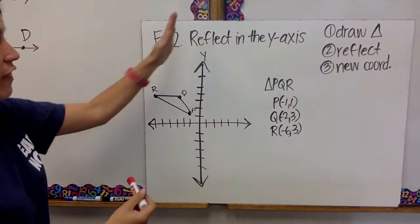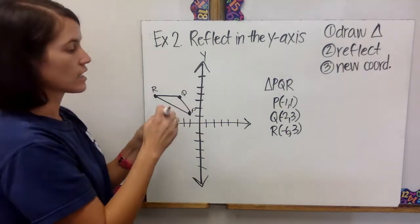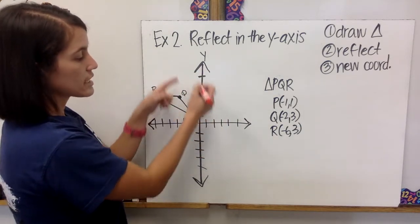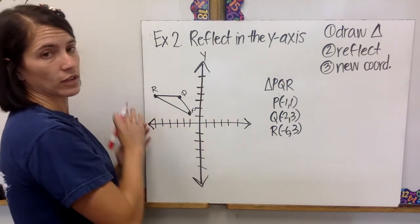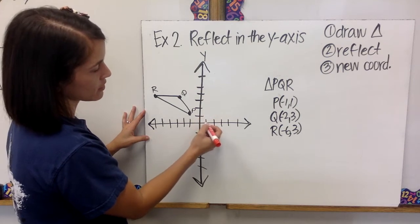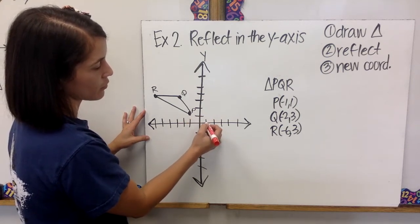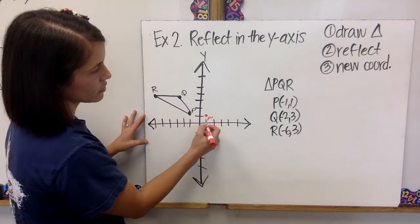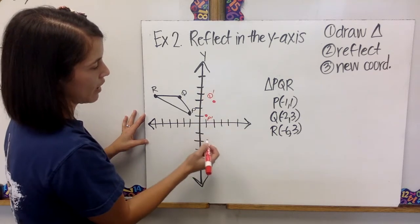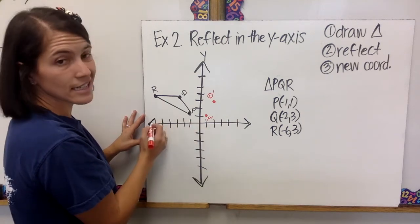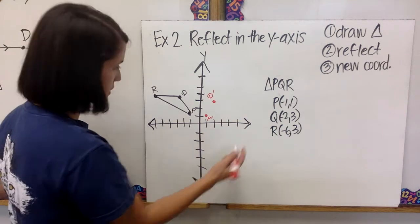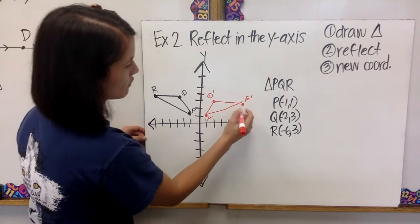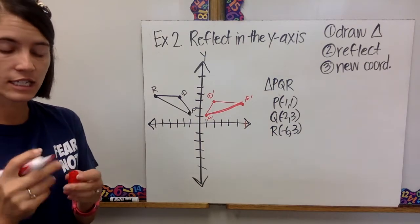Step two: we're going to reflect it over the y-axis, so the y-axis is the flipping point. My vertices are going to stay up and down the same, but instead of going to the left, we're going to go to the right. P is up 1, so instead of going left 1, we go right 1 — that's P prime. Q went over 2, so I go right 2 and up 3 — that's Q prime. R went 6 to the left, so this time I go 6 to the right and up 3 — that's R prime. I connect my vertices and I have a reflected triangle.